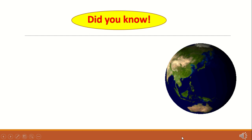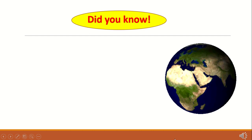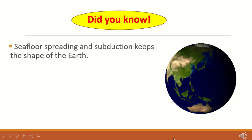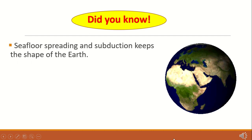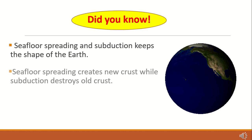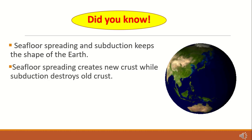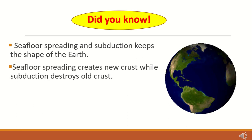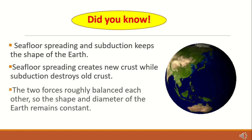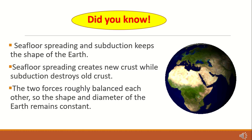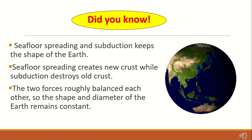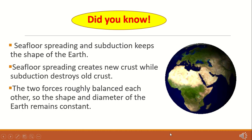Did you know that seafloor spreading and subduction keeps the shape of the earth? Seafloor spreading creates new crust while subduction destroys old crust. The two forces roughly balance each other, so the shape and diameter of the earth remains constant.